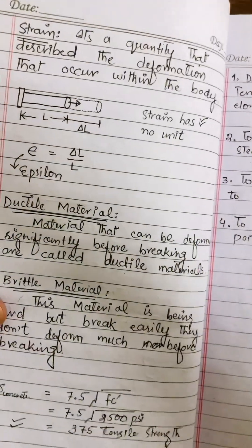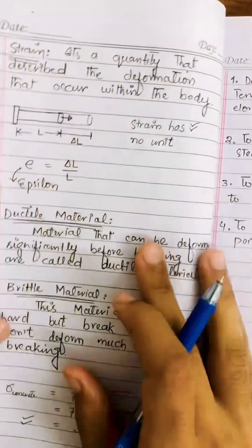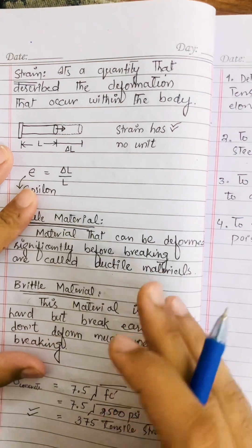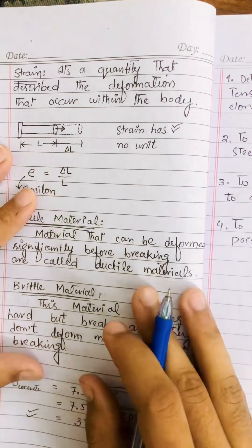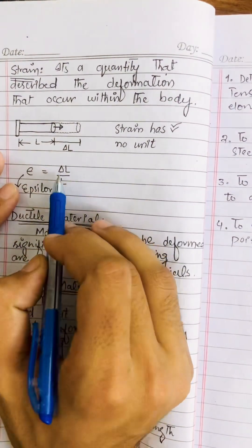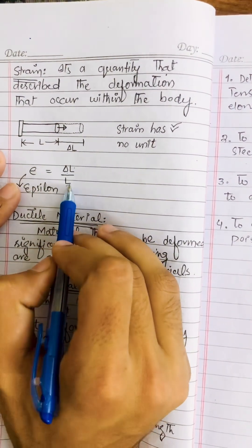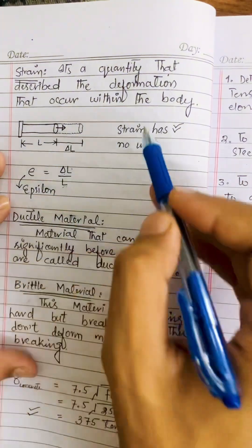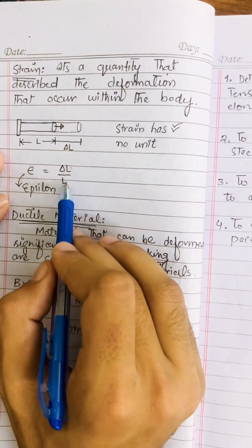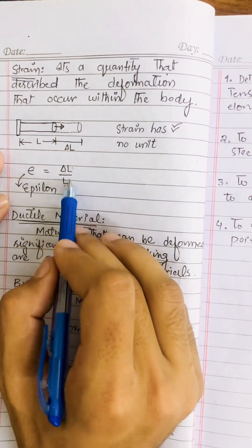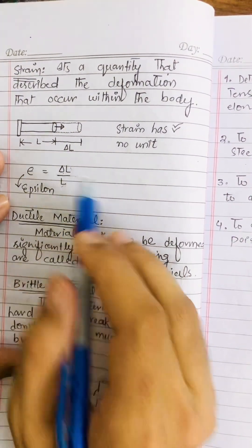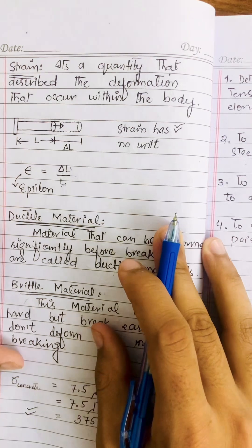Strain is the quantity that describes the deformation occurring within a body — change in length per unit length, denoted by epsilon (ε). Strain has no unit because both the numerator and denominator are lengths (e.g., meters), and they cancel each other out.